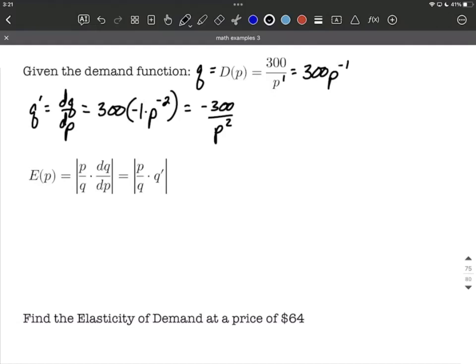To create this elasticity of demand function, remember it's an absolute value. P is going to be the first component in our numerator, and then Q, we're going to copy down the 300 over P in our denominator. Then that gets multiplied by what we just calculated for that derivative, so it's going to be negative 300 over P squared, still inside of our absolute value function.